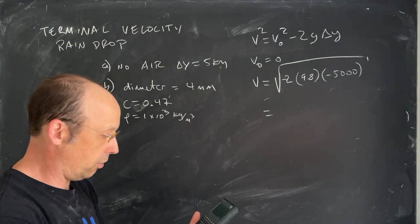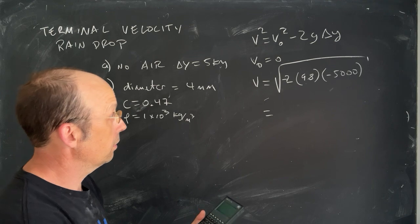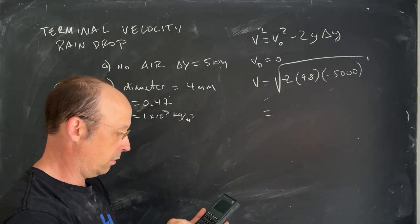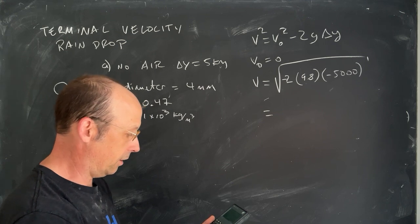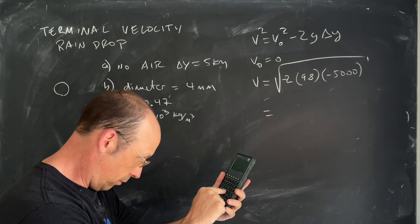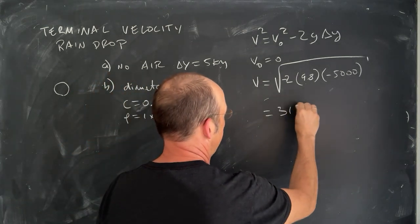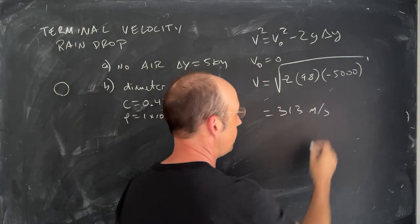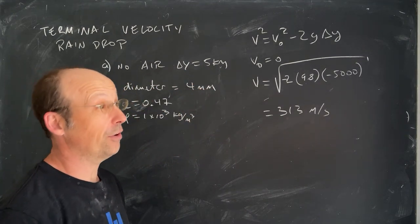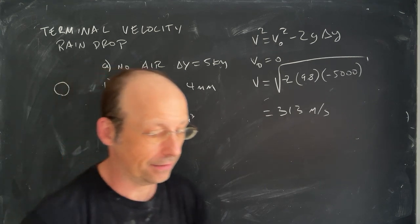Now let's go ahead and put it in the calculator. So I get 2, 9.8, 5,000 times, square root, 313 meters per second. Notice that the speed of sound is 340 meters per second. So that's really fast.